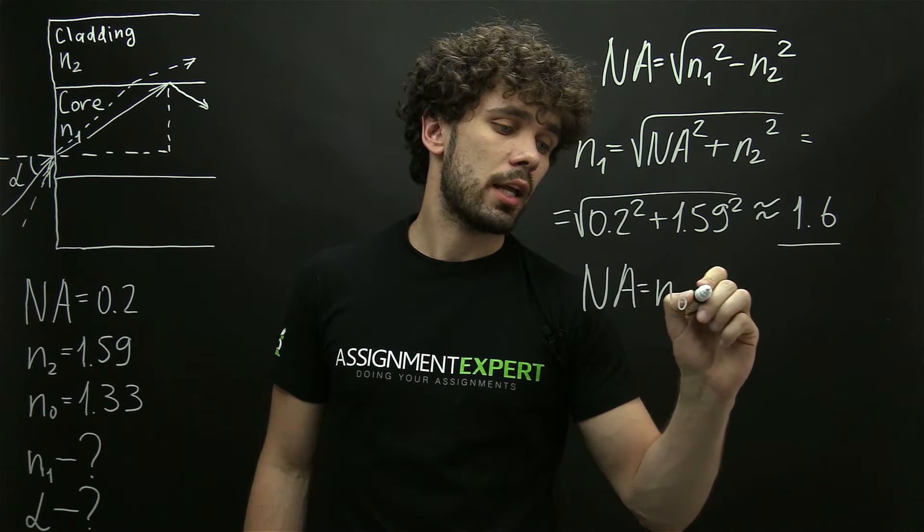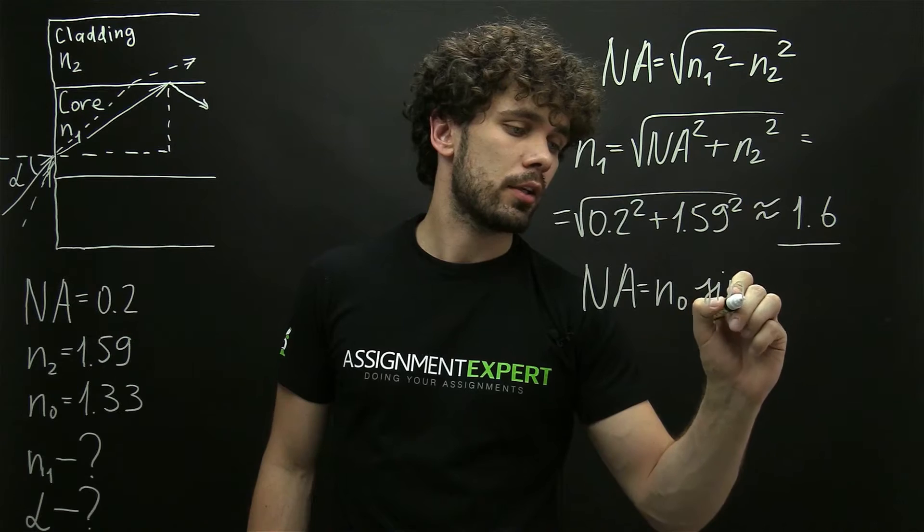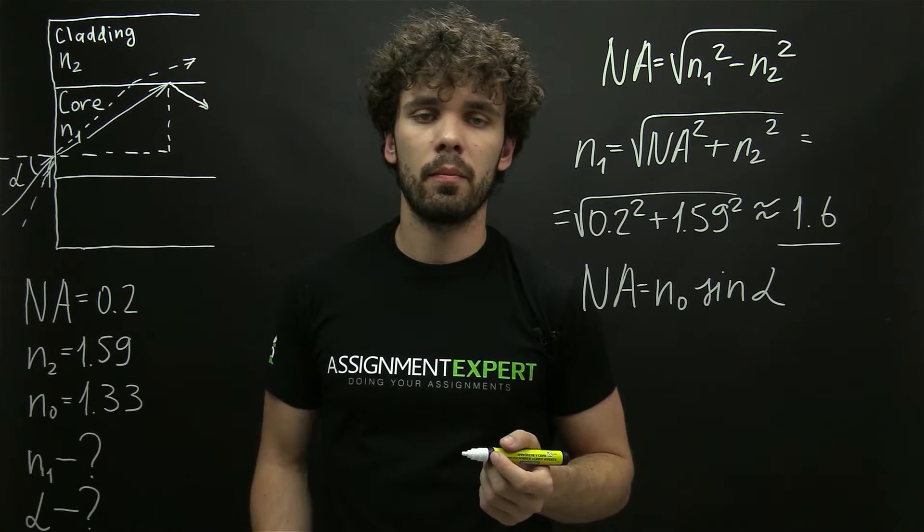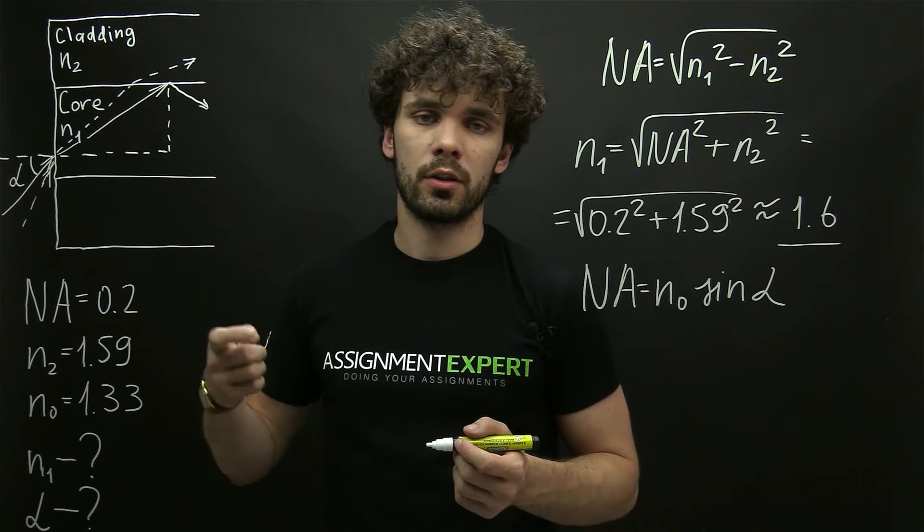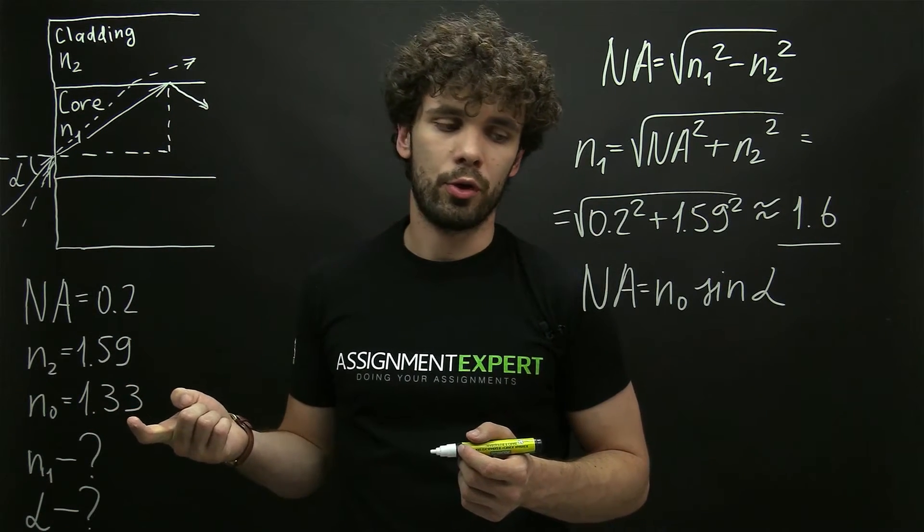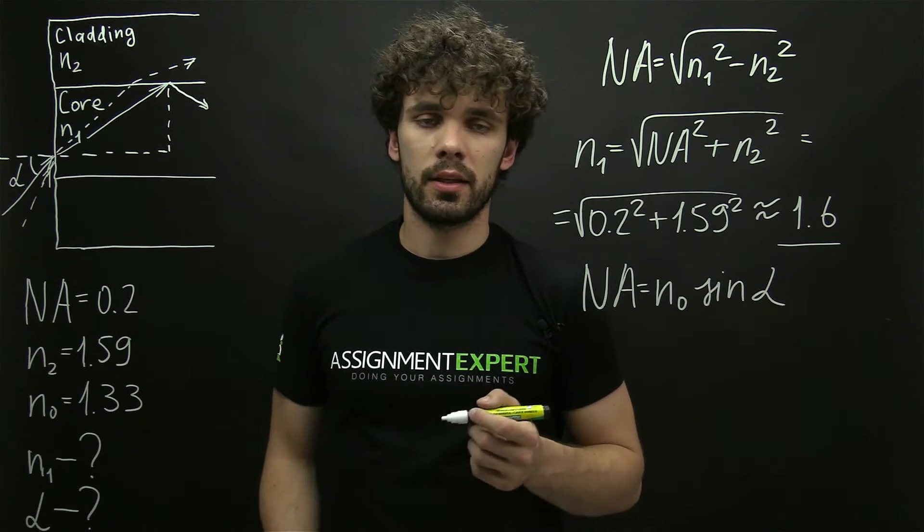It is related with numerical aperture and the following formula shows us this relationship. NA equals n0 times sine of alpha. Here n0 is the refractive index of the medium outside of the optical fiber and in our case this is water with index 1.33 and alpha is the acceptance angle.